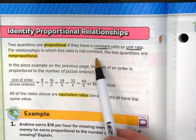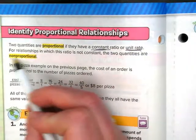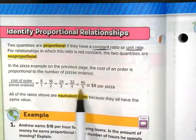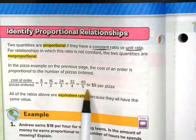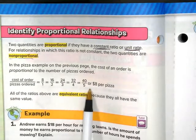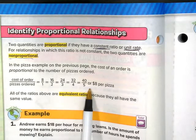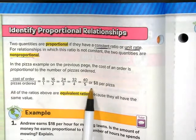If it's not constant, the two quantities would be non-proportional. So in this example the cost of the pizza stays the same no matter how many pizzas you order. A non-proportional relationship might be if you get a discount if you order more than one pizza.